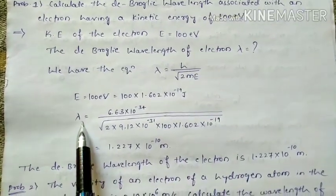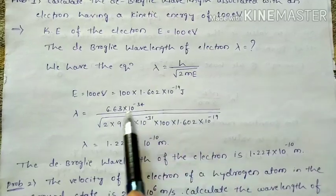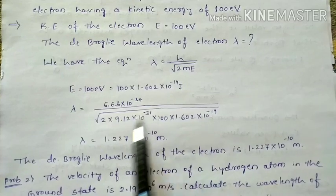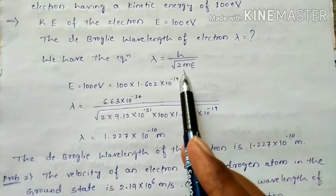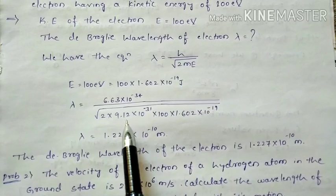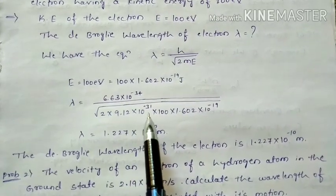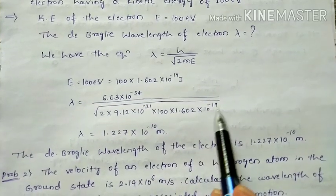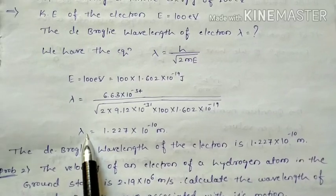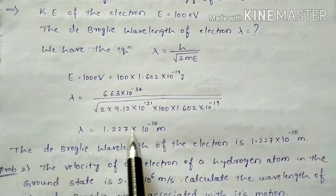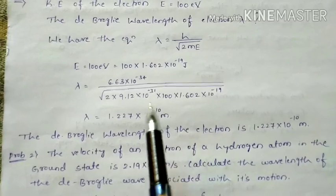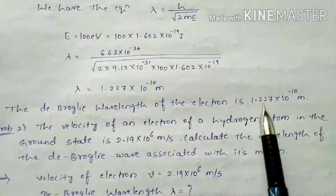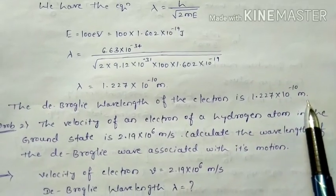Substituting all values: lambda = 6.63×10⁻³⁴ divided by the square root of 2 × 9.11×10⁻³¹ × 100 × 1.602×10⁻¹⁹. After simplifying, we get lambda = 1.227×10⁻¹⁰ meter. So the de Broglie wavelength of the electron is 1.227×10⁻¹⁰ meter.